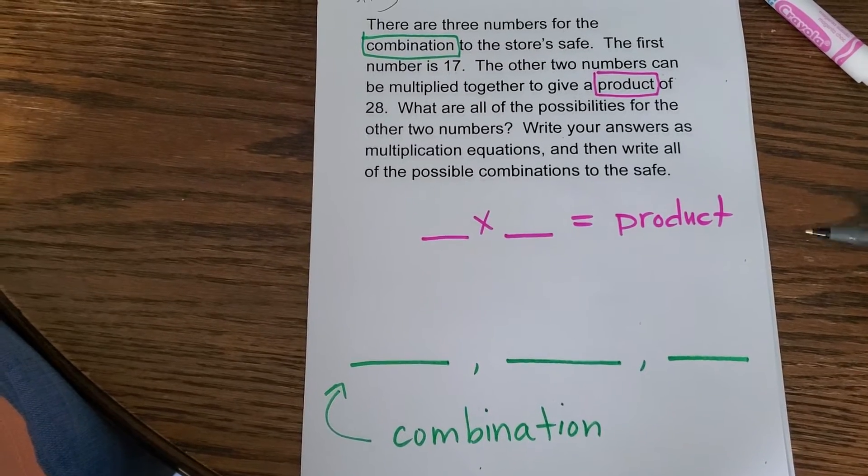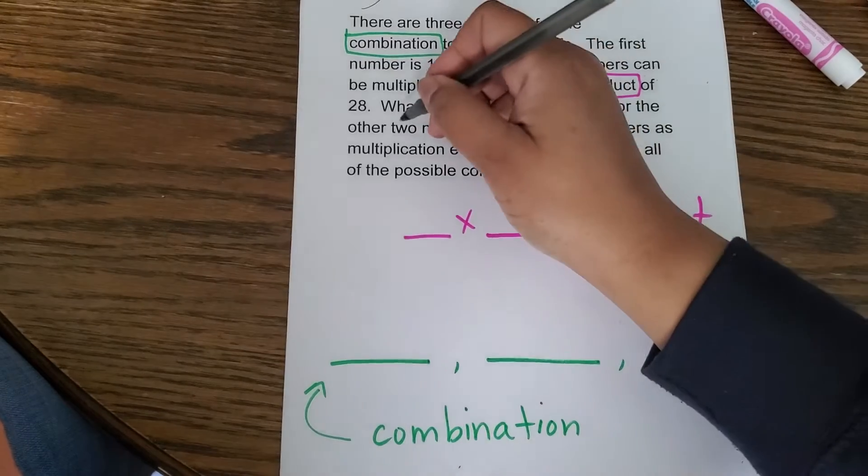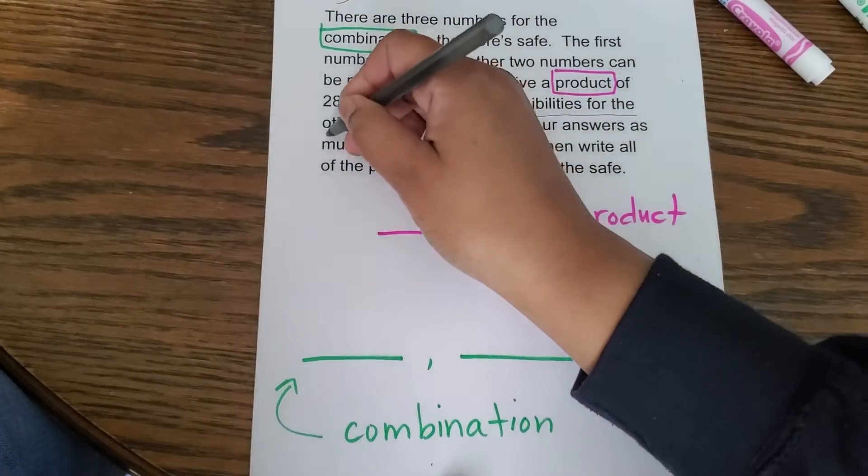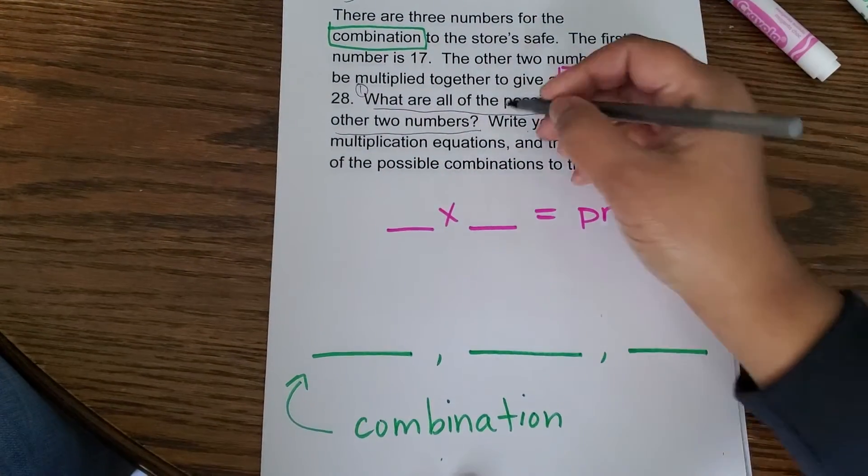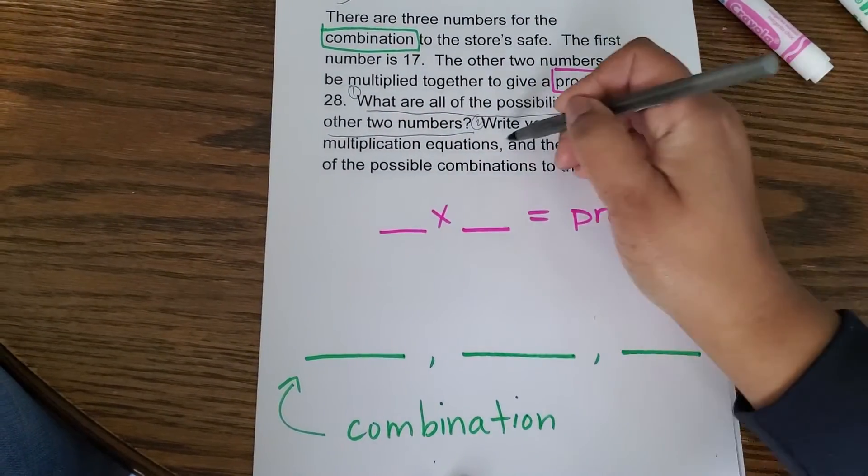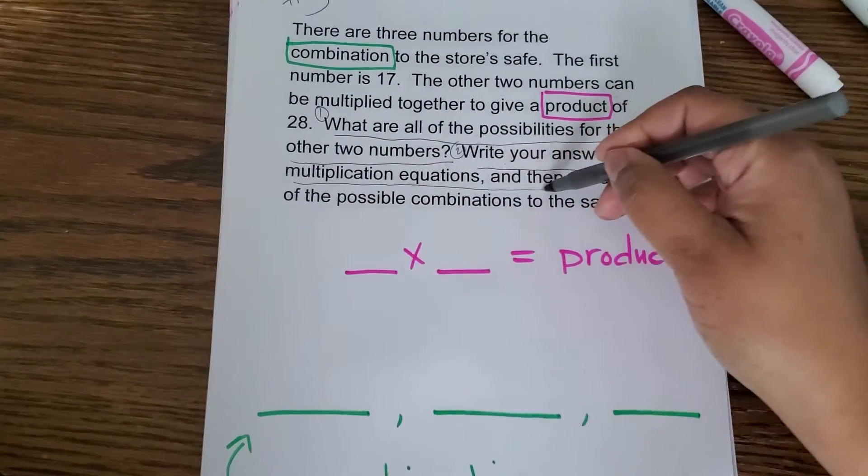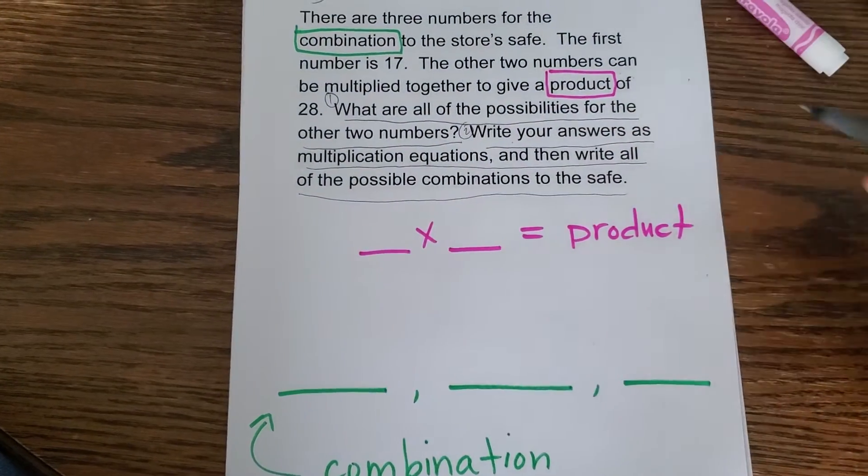This particular question has two parts. The first is, what are all the possibilities for the other two numbers? That's part one. Part two is write your answers as multiplication equations and then write all of the possible combinations to the safe.